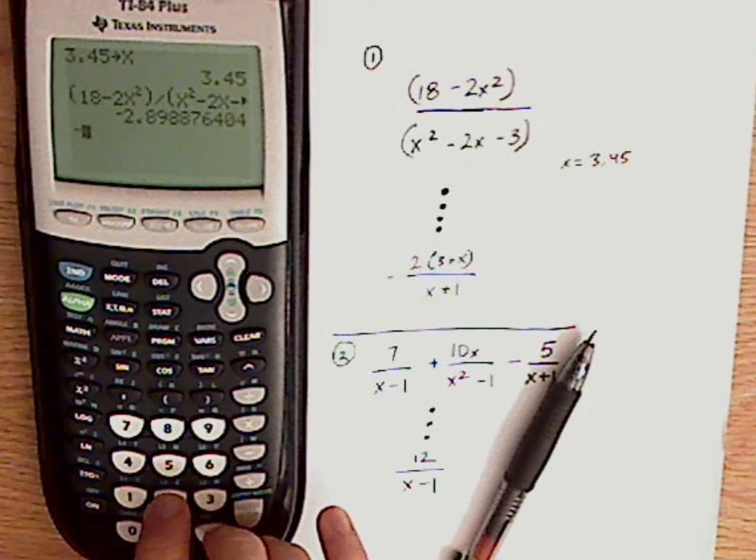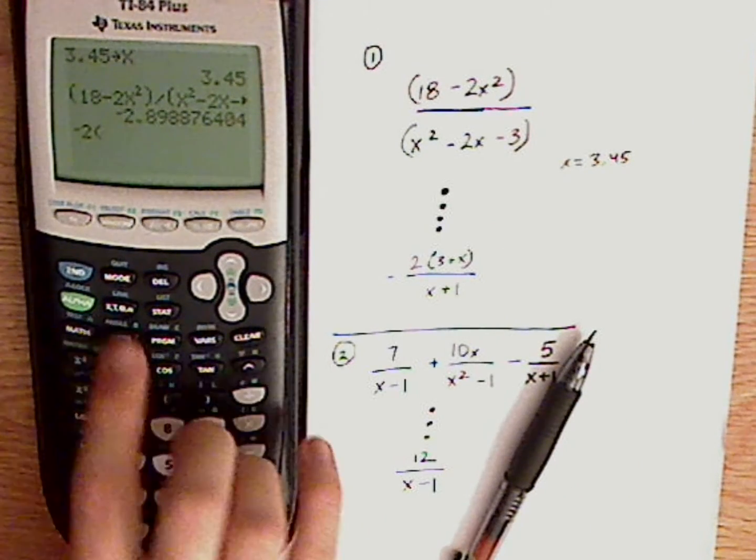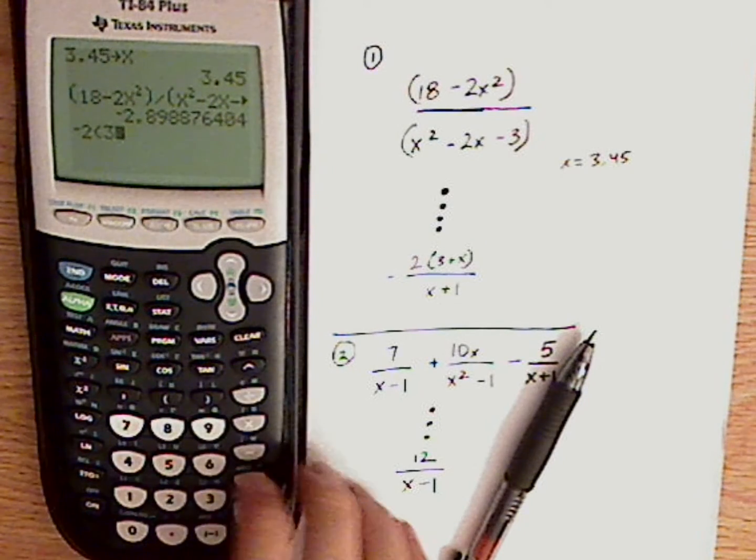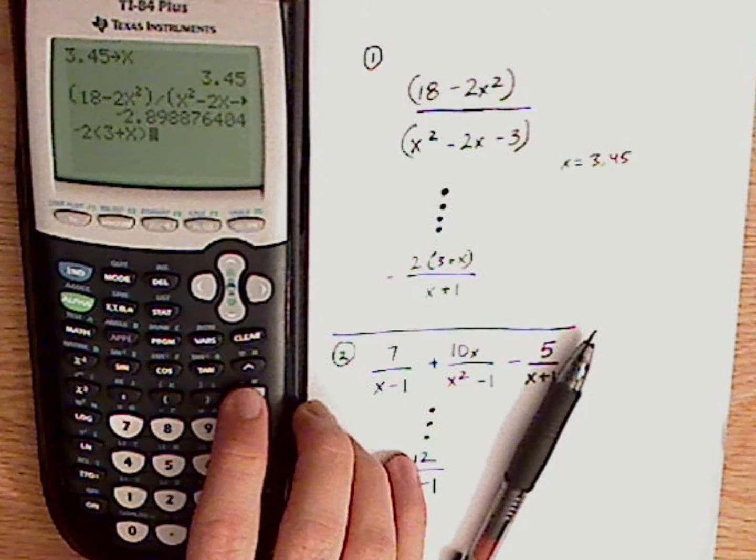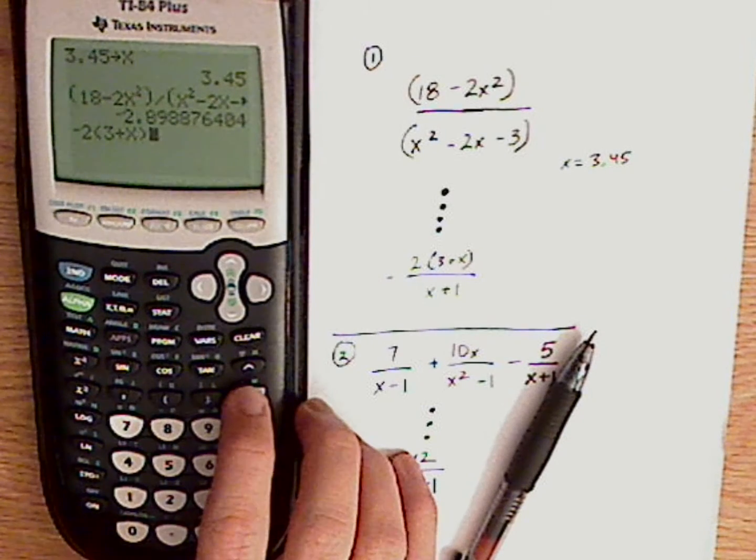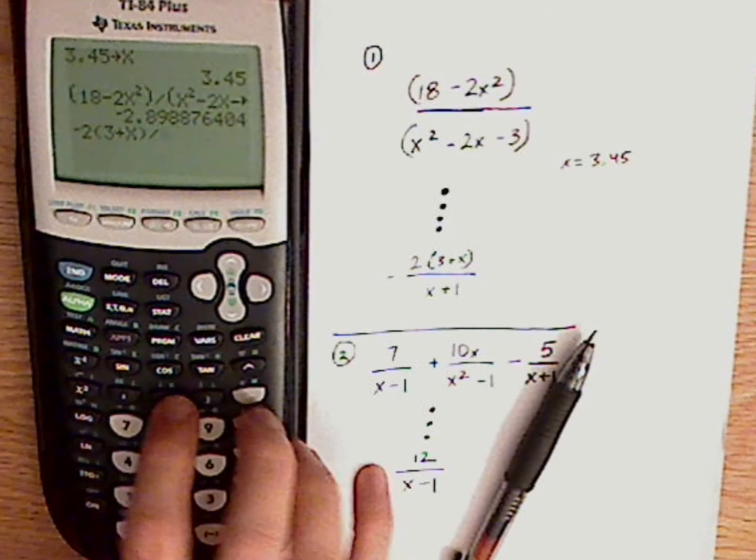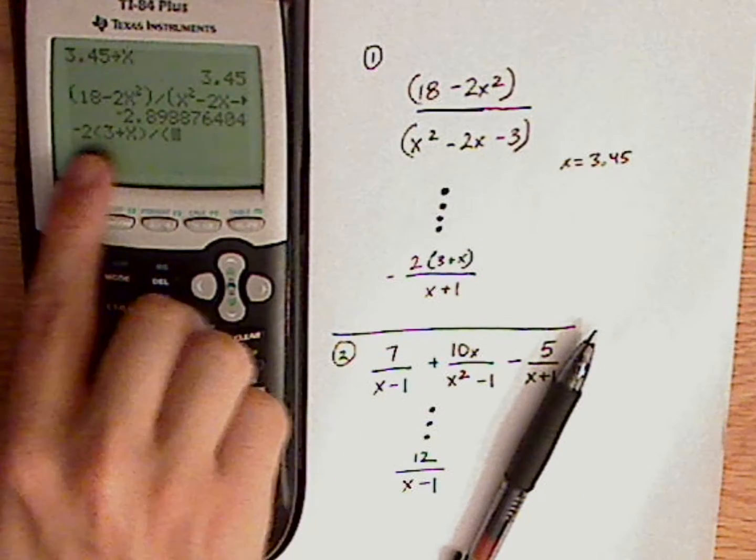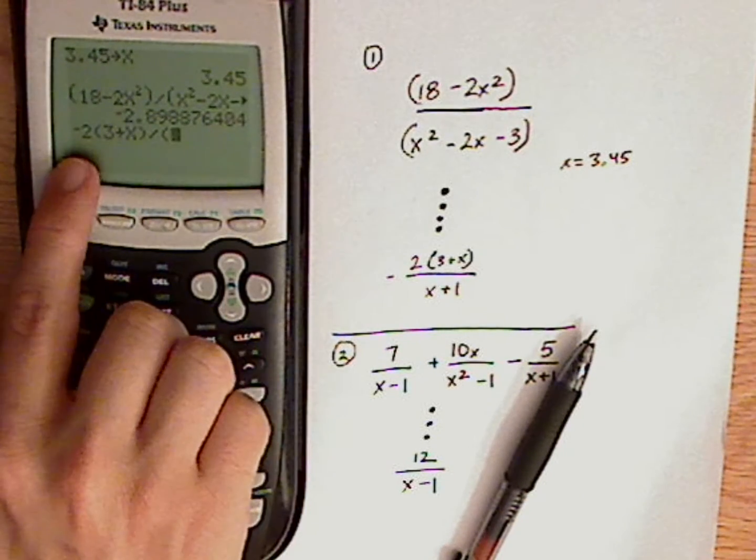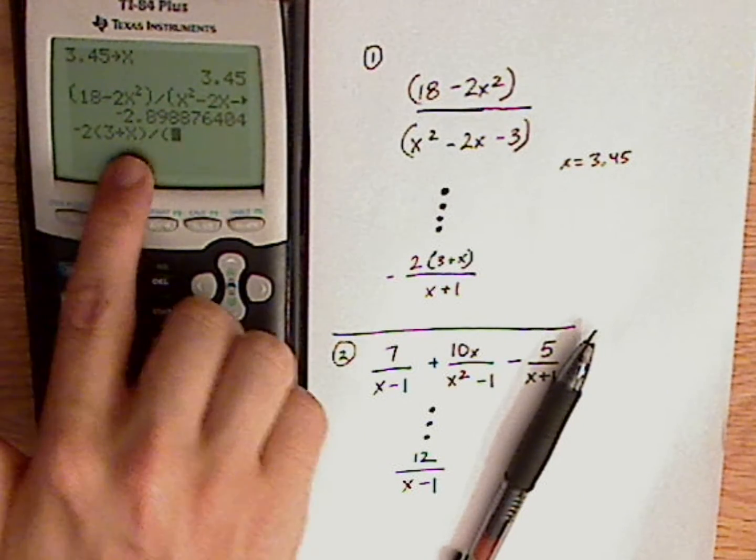So it's negative 2 parentheses 3 plus x, closed parentheses, divided by. And then I have my parentheses for the denominator. Notice I didn't put parentheses around the whole numerator. I don't necessarily have to do that because it's 2 times that.